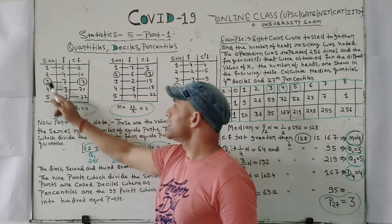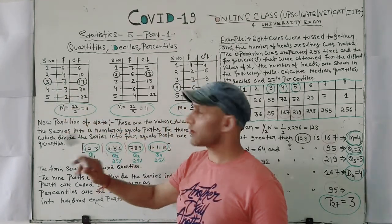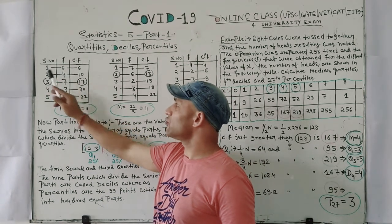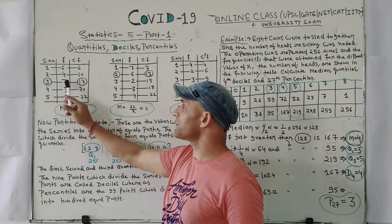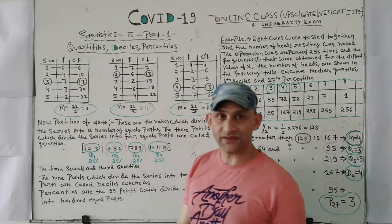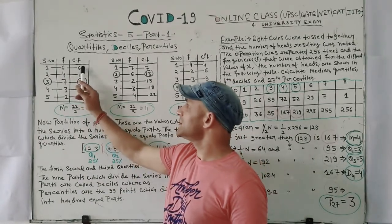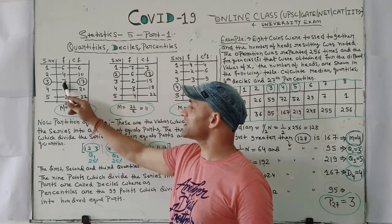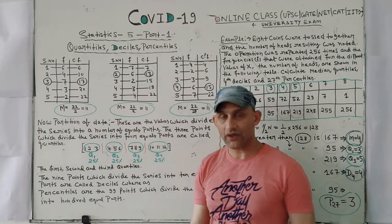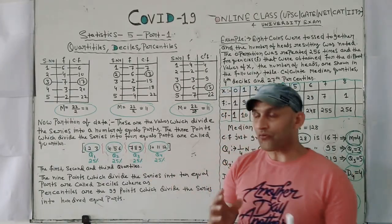The serial numbers are 1, 2, 3, 4, 5. The frequencies are: 6, 4, 7, 3, and 2. The cumulative frequencies are: 6, 6+4=10, 10+7=17, 17+3=20, and 20. Now, if we go to the previous lecture — the median: how to find the median.